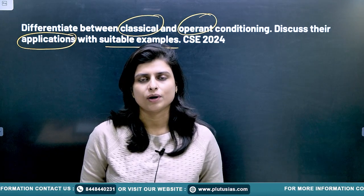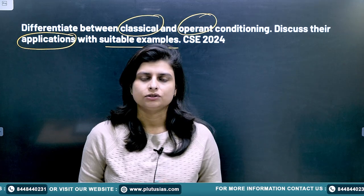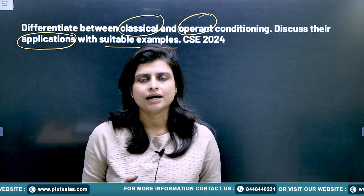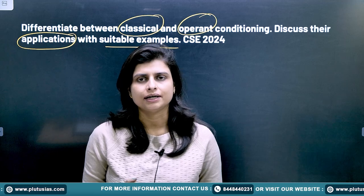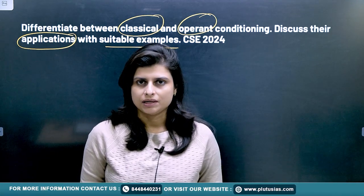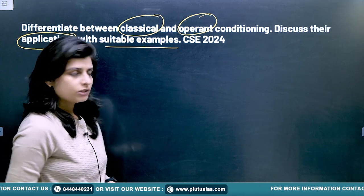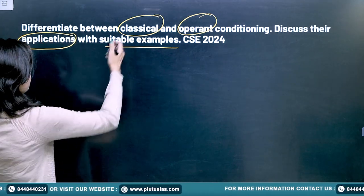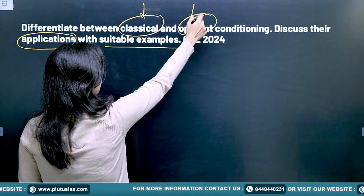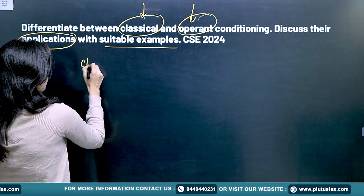Students always have this query of why the psychology paper is not providing a good score. The reason is that we always put examples which are there in books, but the examiners are demanding something more dynamic than that. Now, how are you going to attempt this question? The question is saying you need to differentiate between classical and operant conditioning.